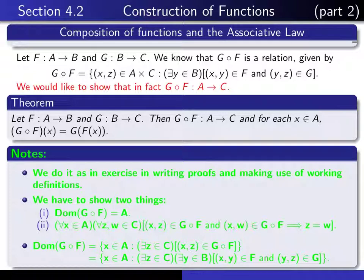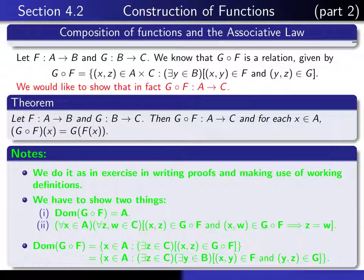What is involved in the first one? Recall the working definition of the domain: the domain of F composed with G is defined to be the set of all X in A such that there exists a Z in C such that (X, Z) is in F composed with G. Expanding on what it means to be an element of the composition: there exists a Y in B such that (X, Y) is in F and (Y, Z) is in G. So in order to prove that the domain of F composed with G equals all of A, we have to give ourselves any arbitrary X in A and prove that we can choose this Z and this Y satisfying these properties.